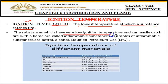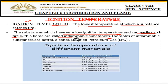Substances that have a very low ignition temperature can easily catch fire. Such substances are called inflammable substances — substances which burn at a very low temperature. You may have noticed that trucks carrying oil, petrol, or diesel have 'inflammable material' written on them in big letters, warning people to keep a proper distance. Inflammable means it catches fire very quickly because its ignition temperature is very low.